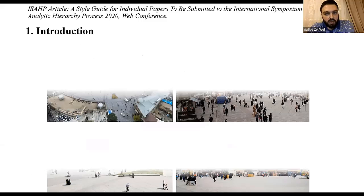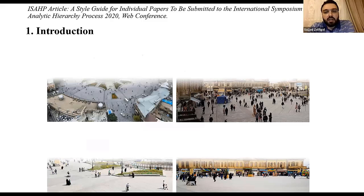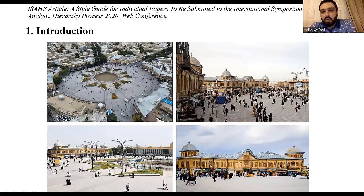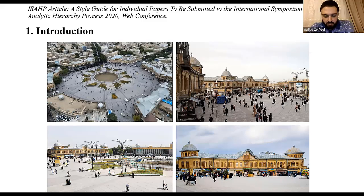As you see in the slide, this is the central square of Hamadan that has six streets. Two of them have changed their role by making them pedestrian-accessible.